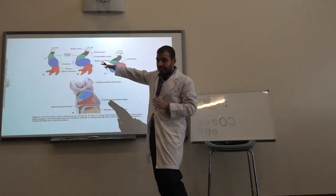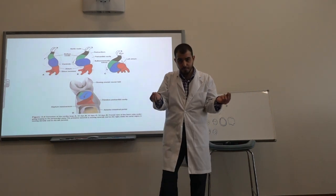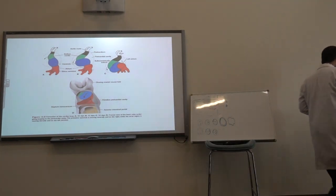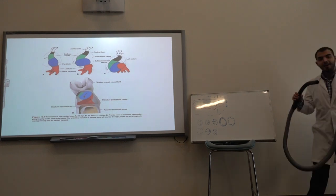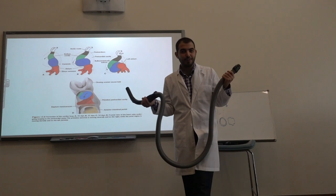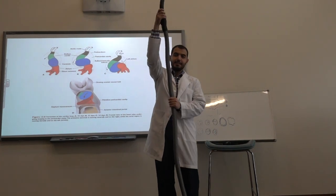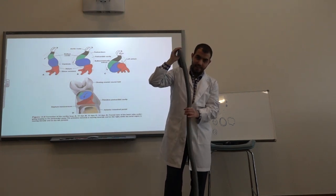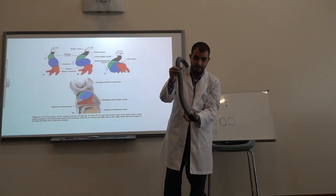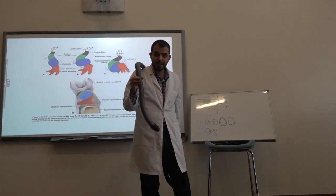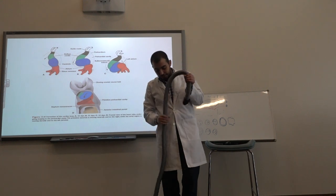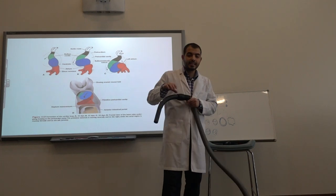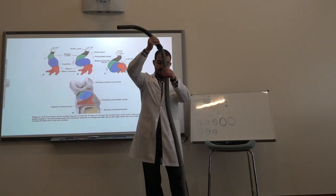Now let's answer the first tricky question — how does the ventricle end up below the atrium? I'm using a tube to demonstrate. One end represents the bulbus cordis, the middle section is the ventricle, the next section is the atrium, and the last end is the sinus venosus. What happens next is called dextral, or right-handed, looping.